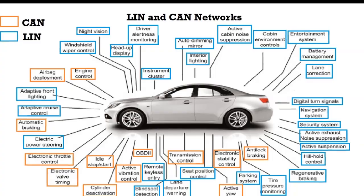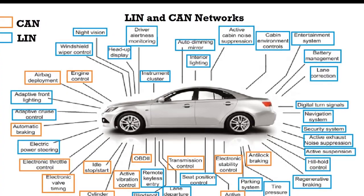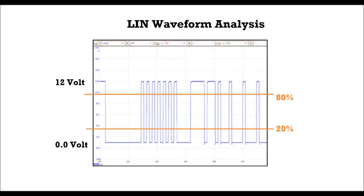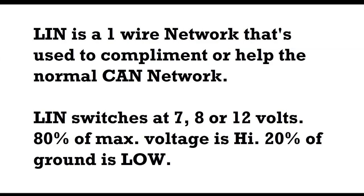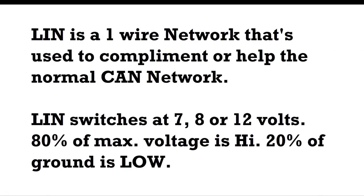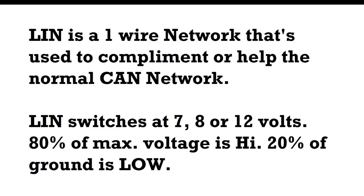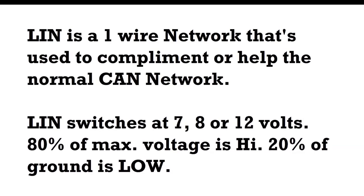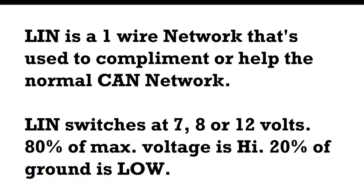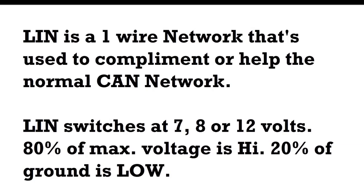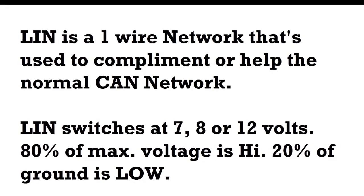LIN usually uses battery voltage through a voltage regulator, so not necessarily 14-point-something charging voltage — it'll be 12-point-something volts, and that will be the high. Again, 20% or less is the low and 80% or more is the high. You may also use voltage regulators at seven or eight volts, so the high would be 80% of seven or eight volts, and the low is always going to be less than 20% of whatever that reference voltage happens to be.